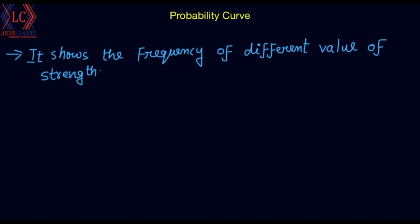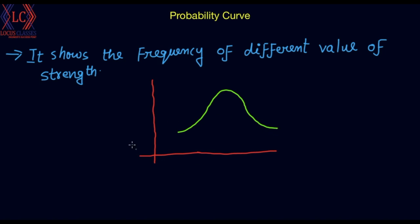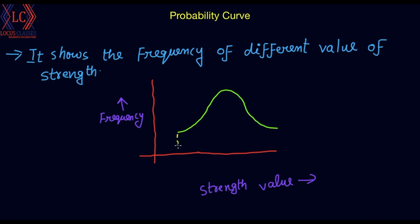I will explain what it means. This is frequency — I am showing the strength value on this axis. Check this axis. This graph shows FM and FCK, which are different strength values.